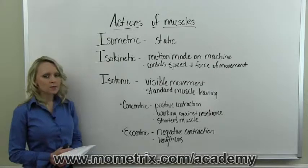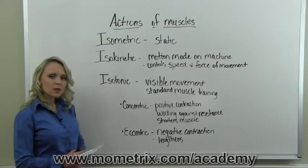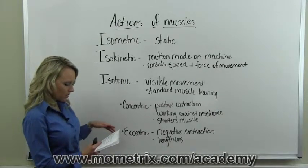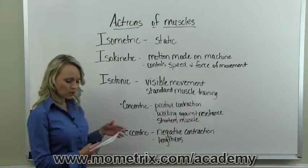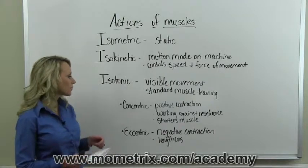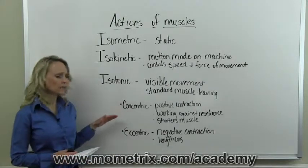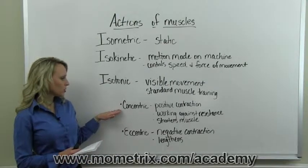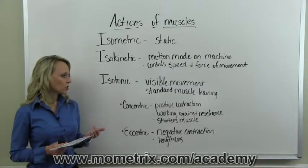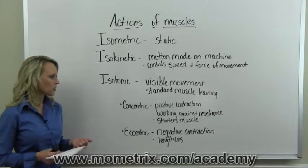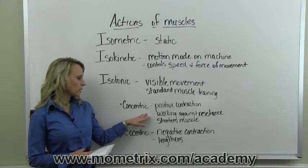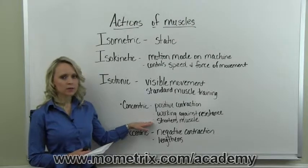Isotonic or dynamic action moves the muscle visibly. It is a motion most often associated with standard muscle training. It can be broken down into two phases. The concentric phase, which is the positive contraction, is usually the lifting action. It is working against resistance, and this causes a shortening of the muscle.